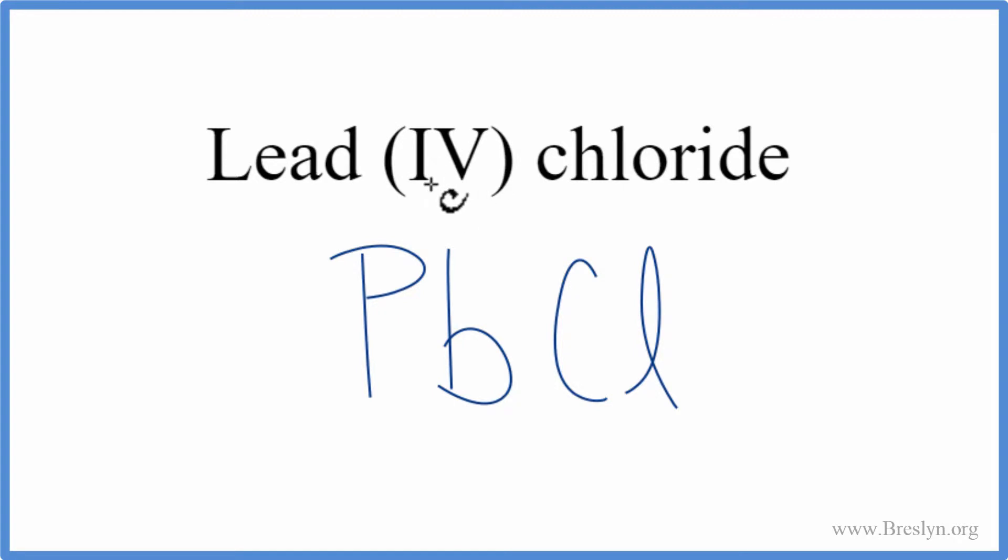So lead, we know that that's going to have a 4+, because it's lead (IV). The Roman numeral tells us the charge on the transition metal. Chlorine, we look at the periodic table, that has a 1 minus charge.